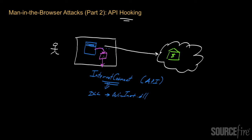This is happening underneath the hood — it's all surreptitious, and the user doesn't know it's happening. One way you can hook an API is by having the malware modify the preamble or the beginning of the actual module being called. For example, Windows Internet Explorer will call InternetConnect, which is located inside WinInet.dll. The attacker's code is going to modify the very beginning of InternetConnect so that rather than doing the functionality included in InternetConnect, something else happens instead.